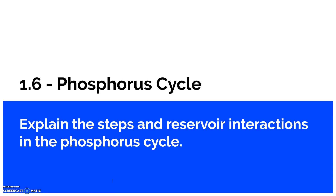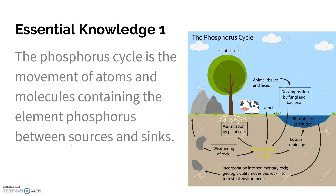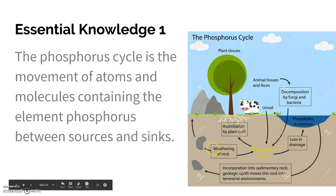Section 1.6 is on the phosphorus cycle. The goal is the same as the last two: to be able to explain the steps and reservoir interactions in the phosphorus cycle. You can see the sources and sinks. Similar to nitrogen, phosphorus is important in our proteins, our DNA, and so on. We require plants to assimilate phosphates into their roots, and then we eat those things to get the phosphorus in us. Decomposition is also important.